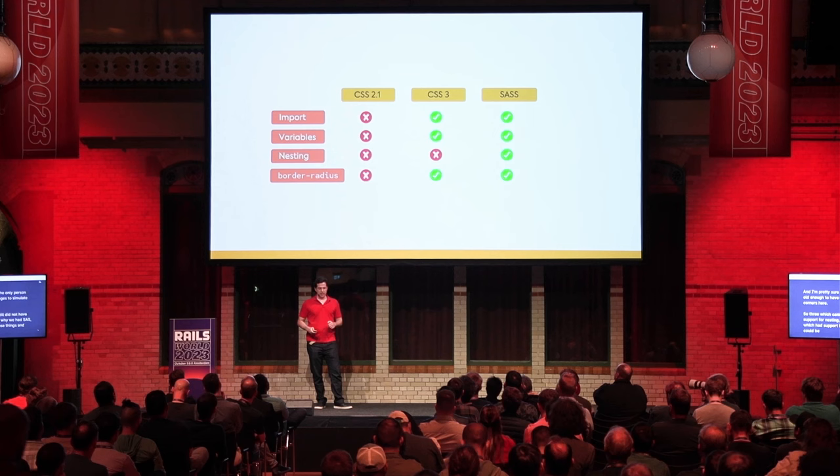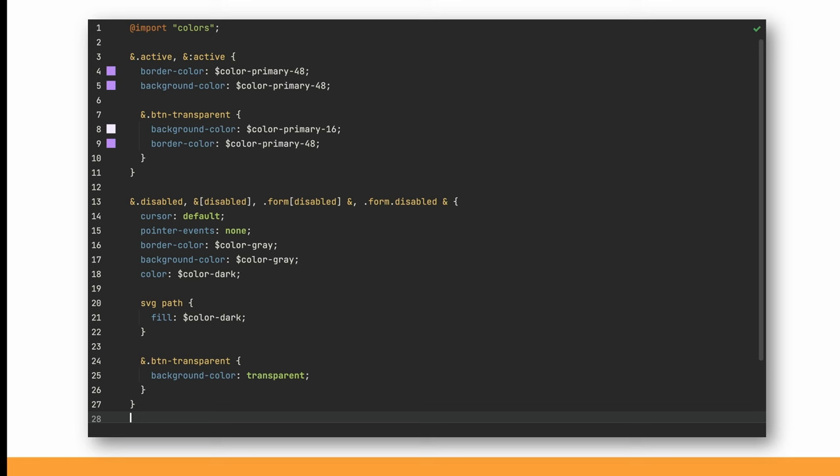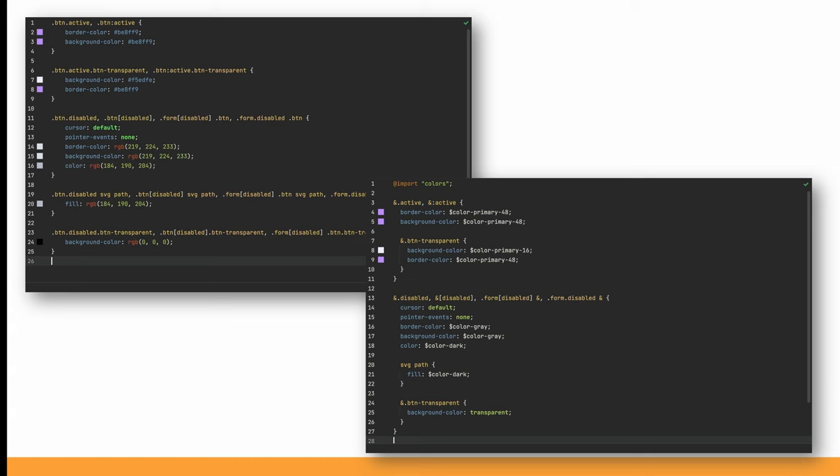To understand the impact of Sass, all we have to do is take a look at this code in plain CSS and compare it with this code in Sass. The Sass code has structure, and the use of variables better conveys what the values mean.